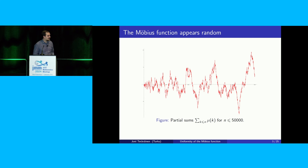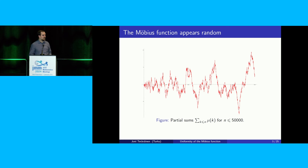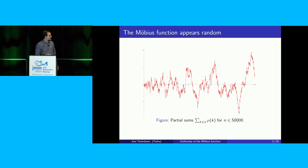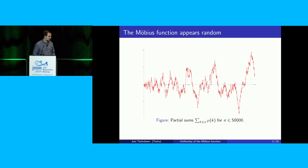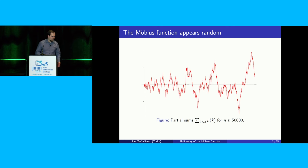Here I plotted the partial sums of the Möbius function up to 50,000 — the sum of n up to x of the Möbius function, where x goes up to 50,000. You can see it looks quite a bit like a random walk. You have roughly the same amount of time that the partial sums are positive and negative, and the peaks are roughly of the size of the square root of the length of the sum.